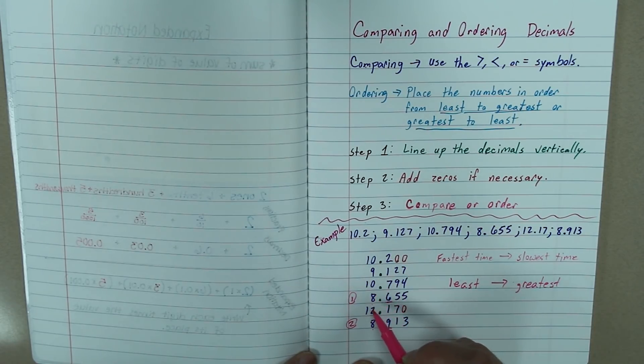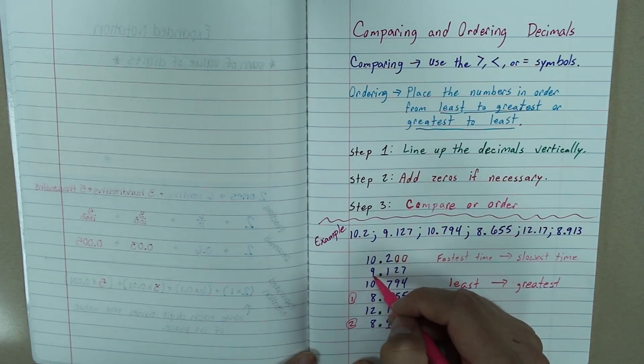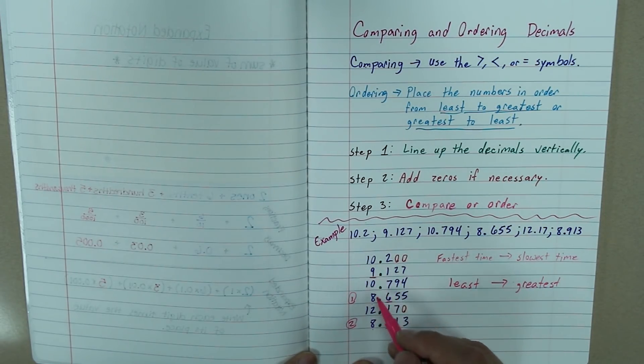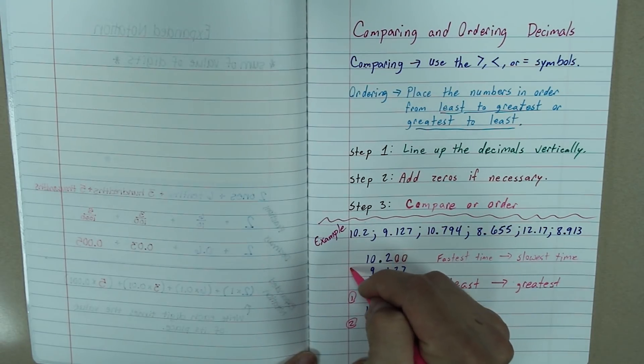Now, I am going to look at the next whole number that is the smallest. I have a nine here. And so, nine is going to be smaller than the ten and the twelve. So, this will be three.